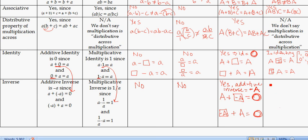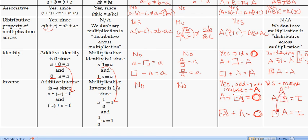For matrix multiplication, there is also a multiplicative inverse. We denote it A with a superscript negative 1. If we multiply A by its inverse when it exists, we get back to the identity matrix. We'll have more to talk about in future videos, but this gives us a comparison of how the properties of matrices compare to the properties of real numbers.